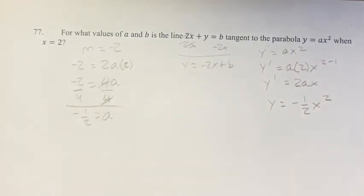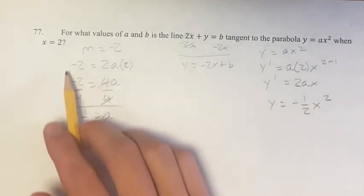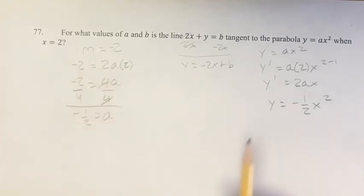The way we're going to find that is we're going to say, okay, if this is our equation for the parabola, and x equals 2 is the point where these things are tangent, then we know that y equals negative 1 half times 2 squared, y equals negative 1 half times 4, y equals negative 2.